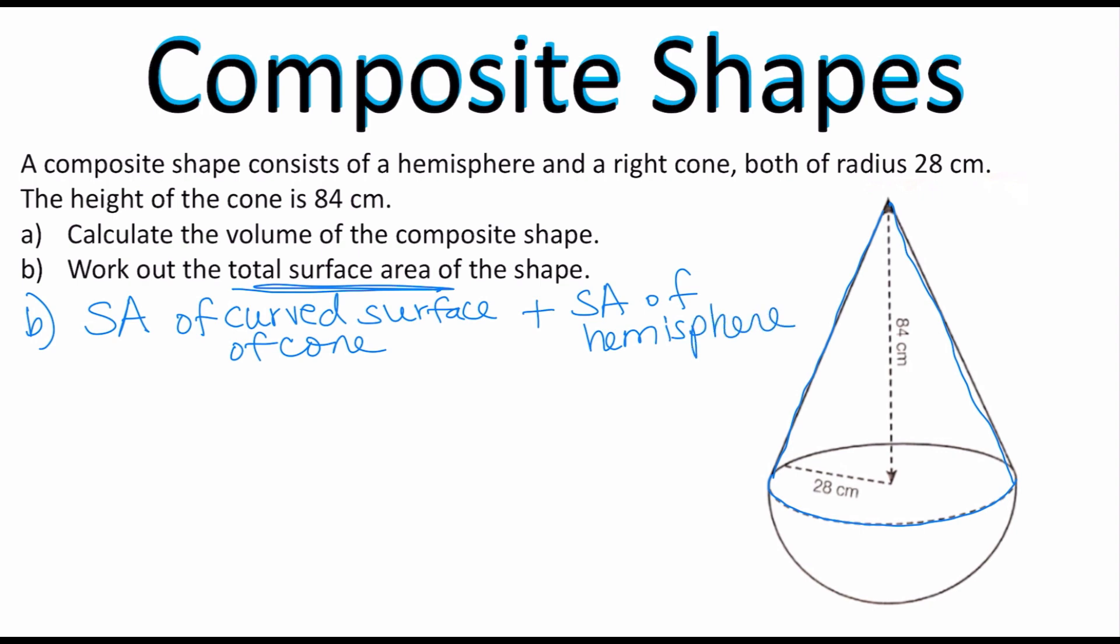To figure out the surface area of the curved part of the cone I'm going to use the formula πrl where l stands for the slant height. I don't know the slant height. Here I have in red a right triangle because this is the actual height of the cone.